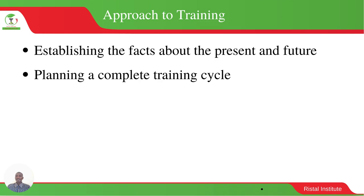The approach to training involves establishing facts about the present and future — what you want to achieve in the short term and long term. The next approach is planning a complete training cycle, which begins with conducting a training needs analysis to identify gaps in employee performance, then rectifying those gaps through training. If you skip the training needs analysis, you may end up giving training to the wrong person, wasting both time and resources. Training must be given to the right person who really deserves it.